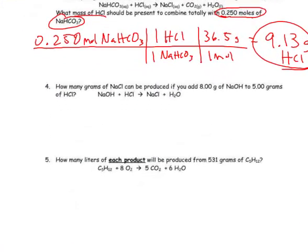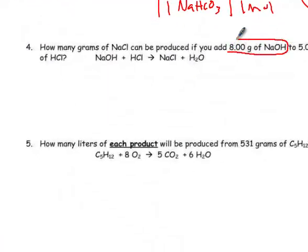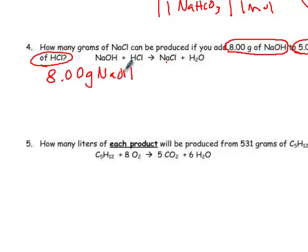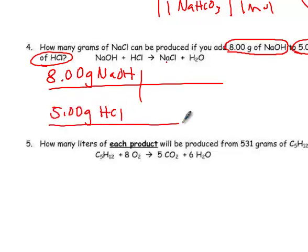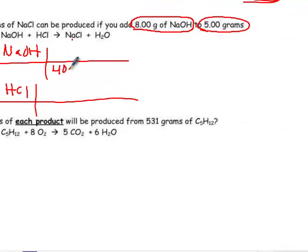All right, number 4. This one is a limiting reactant. I have grams of NaOH, and I have grams of HCl. And I want to know how much of this stuff will I produce. Well, when you have two reactant masses given to you, you've got to figure out which one runs out first. And the way we do that is, instead of learning a new way to solve stoichiometry problems, just do them both all the way to NaCl and pick the smaller of the two.